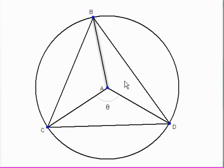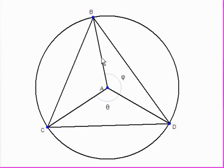With that line present, we can specify the angle BAD. We'll define that to be Phi. And given that, what is the angle BAC? Geometry Expressions can tell us that — it's 360 minus Theta minus Phi.